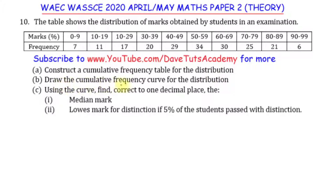We have to draw the cumulative frequency curve for the distribution, and then using the curve, we have to find correct to one decimal place: the median mark, and the lowest mark for distinction, if only 5% of the students passed with distinction. This is the question, and we are going to go ahead to attempt them correctly.